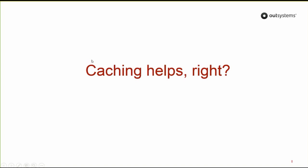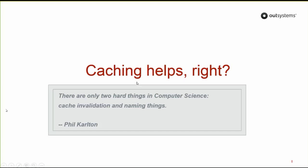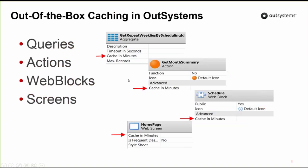So, is caching going to solve all of our problems? It would be great if that was the case, but as Phil Carlton once said, caching has its own problems like invalidation. Even if it's easy to do in OutSystems, one needs to understand which situations pay off and which don't. For those who haven't yet used the out-of-the-box caching in OutSystems, it's quite easy — you simply use it to cache queries, actions, web blocks, and screens.